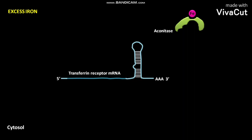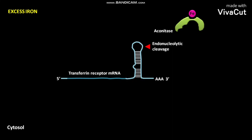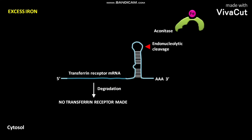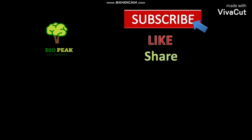As a result of this dissociation, endonucleolytic cleavage of transferrin receptor mRNA occurs, so the transferrin receptor mRNA undergoes degradation. As a result, no transferrin receptor is made. Consequently, less iron is imported across the plasma membrane of a cell.